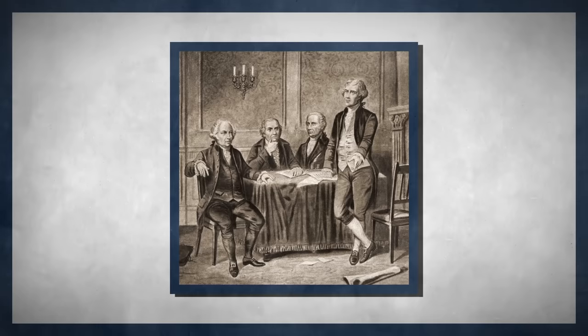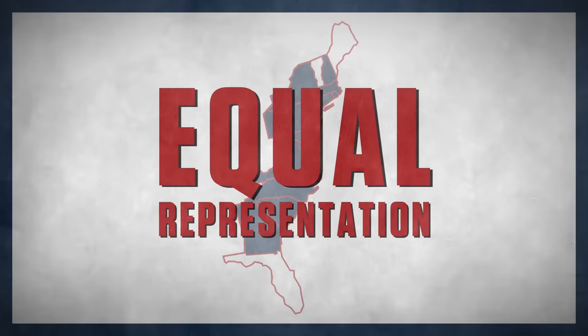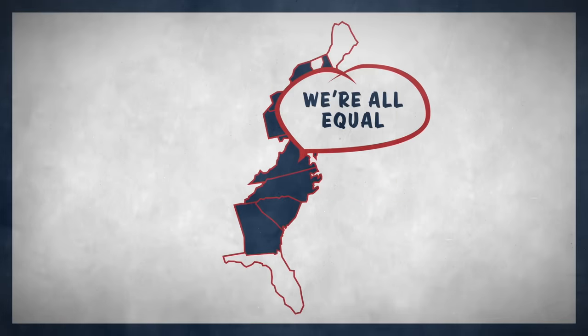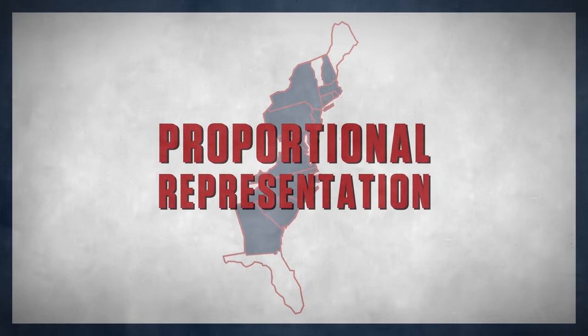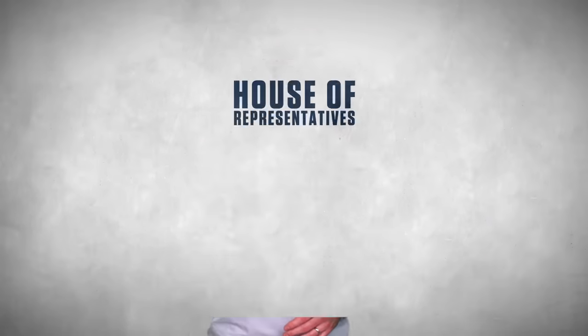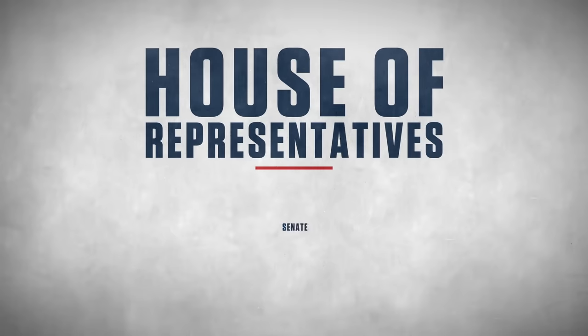Back when the Founding Fathers drafted the Constitution, debate stirred over the type of legislature they'd have — one with equal representation, i.e. the same number of representatives for each state, or a proportional representation, in which the number of representatives reflected the size of each state's population. Unable to choose, they settled on both: a legislative branch with two houses, the House of Representatives and the Senate, which together formed the Congress.